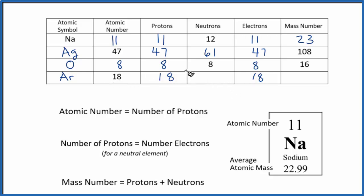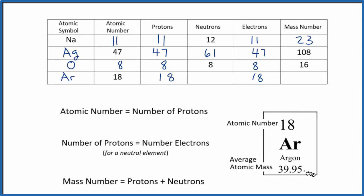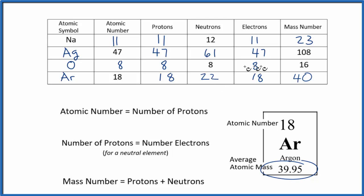For argon, we don't know the neutrons or the mass number, and we can't figure them out just by looking at it. In this situation, you go back to the periodic table. Argon has an average atomic mass of 39.95 — we round that to a whole number, 40. So now we have a mass number. We know the protons, so we can figure out the neutrons: 18 plus something equals 40, meaning 18 plus 22 equals 40. With that, we've finished the table.